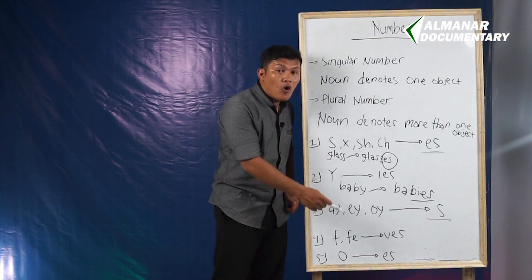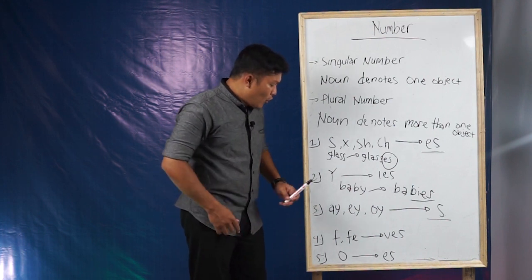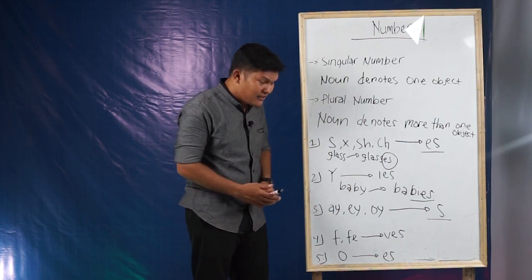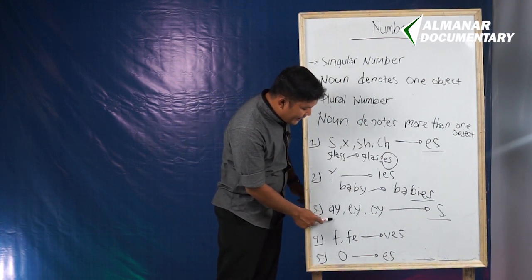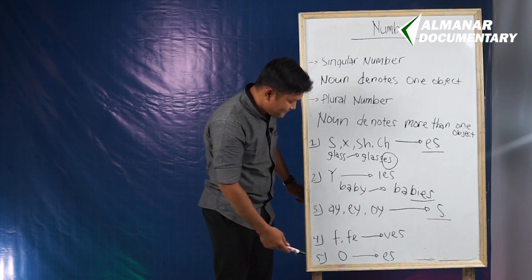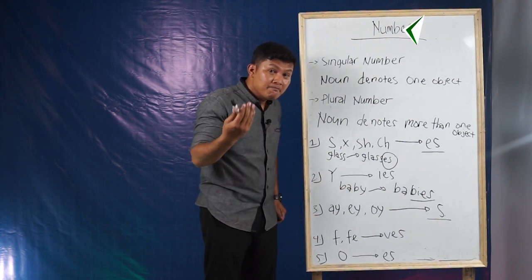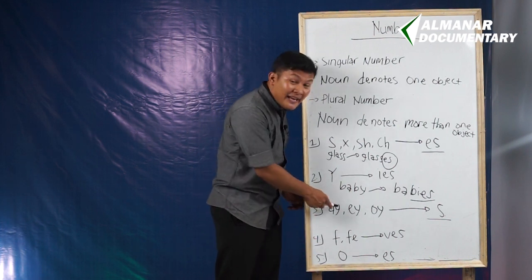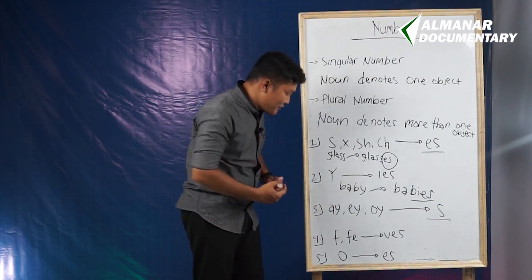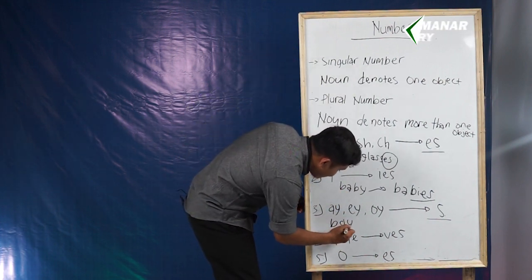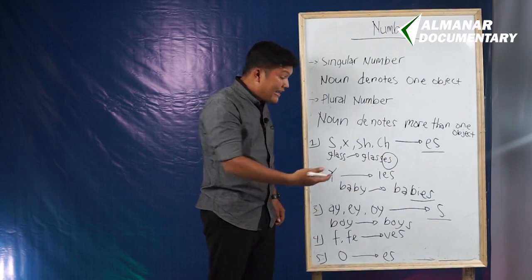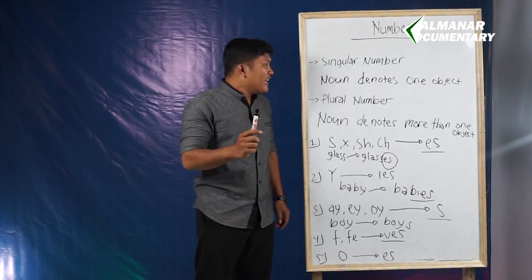The third rule: if the singular ends in AY, EY, OY, or OI, you just need to add S. For example, 'bay' becomes 'bays', 'pray' becomes 'prays', 'boy' becomes 'boys' — just add S at the end of the word.